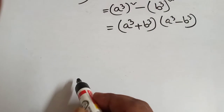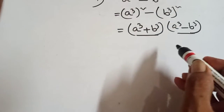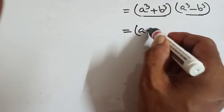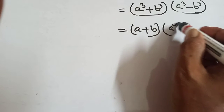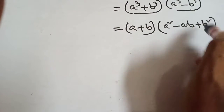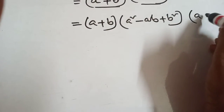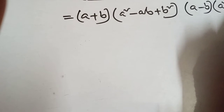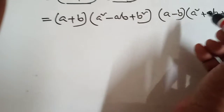Now again apply the formula of A cube plus B cube and A cube minus B cube. A cube plus B cube formula is A plus B into A square minus AB plus B square.